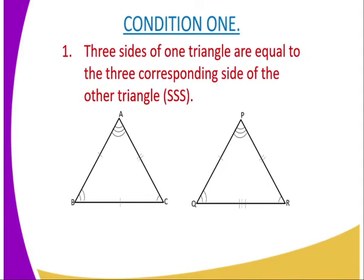The first condition: three sides of one triangle are equal to the three sides of the other triangle. And therefore, in this case, it is represented as SSS, three S, meaning that the three corresponding sides are equal. For example, in this case...